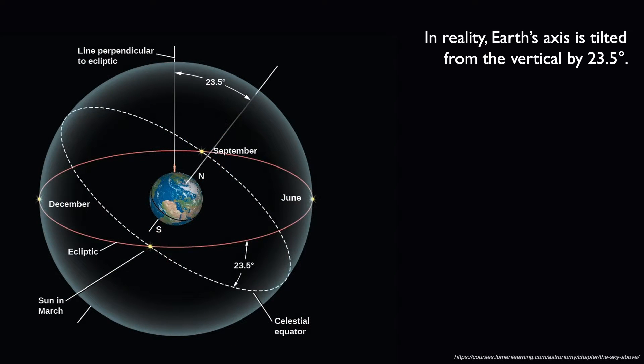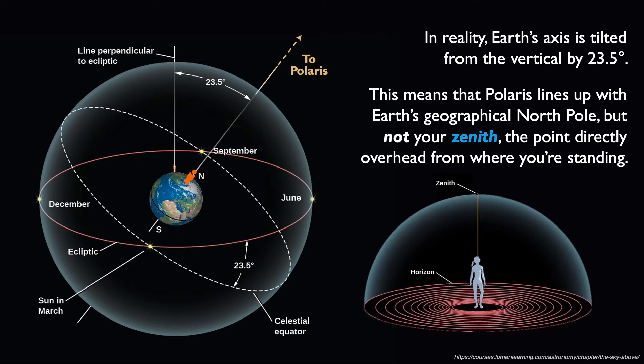We have to keep in mind, though, that Earth's axis is in reality tilted from the vertical by 23.5 degrees. This means that the north star Polaris lines up very closely with Earth's geographical north pole, but it may not always align with your zenith, the point in the night sky that's located directly overhead from where you're standing.